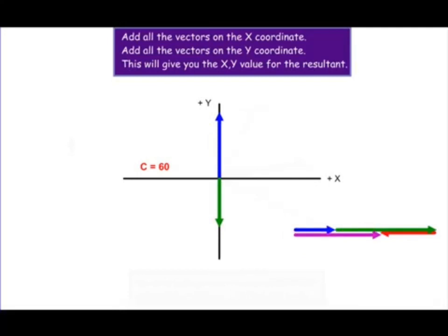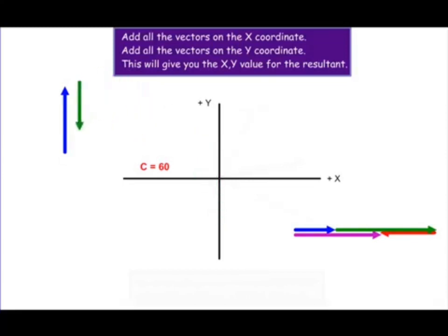Now let's add up all the vectors acting in the y direction. We take the y component of vector a, and the y component of vector b is negative, so that has to be subtracted. The sum of these two vectors is this small vector as shown.